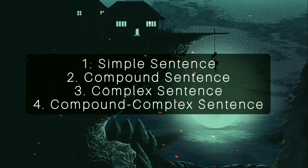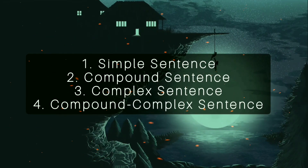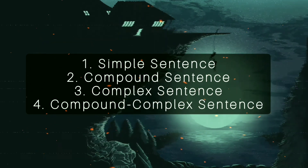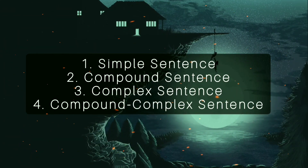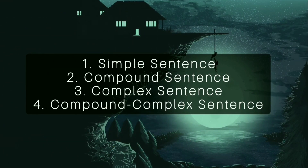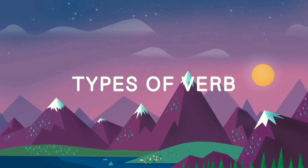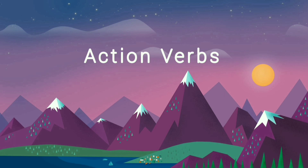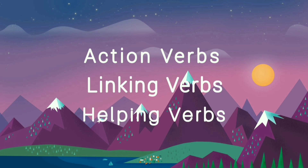Sentence types can be divided into: simple sentence, compound sentence, complex sentence, and compound-complex sentence. Types of verbs can be divided into action verbs, linking verbs, and helping verbs.